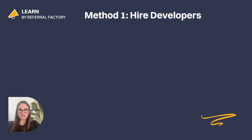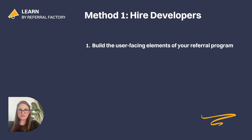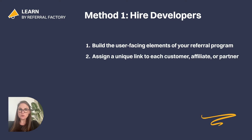Method number 1: hire developers to create your referral links as well as the interface for your referral program. To give you a sense of the scope of this kind of project, here are some steps to follow. Number 1: collaborate with developers to create referral program landing pages for the people doing the referring, as well as for the friends who get referred. In addition to the all-important referral tracking, be sure to consider all the minor details like link sharing tools and automated email notifications. Number 2: use an automatic URL generator to create the referral links and a shortener, like Bitly for example, for easy sharing. You'll also need to consider how you get these referral links into the hands of your referrers.